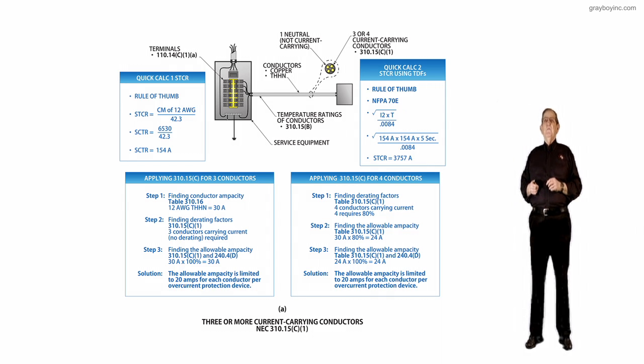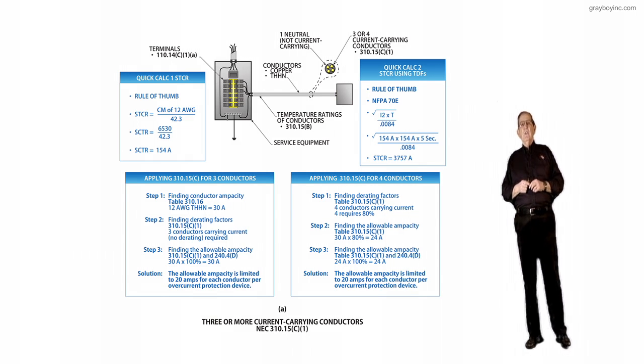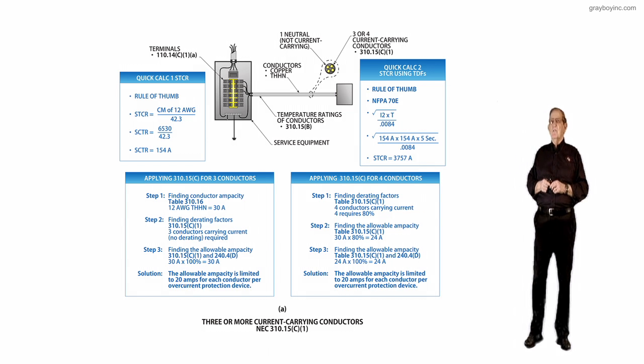If you look at the conduit in the boxed-in dotted area there. First, we have three or four current carrying conductors, 310.15 C1. Secondly, you have one neutral that's not current carrying, so you only have three conductors in there that would be considered current carrying.